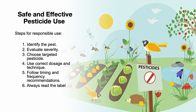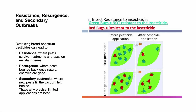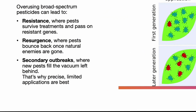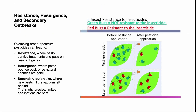For any pesticide use, you must identify the pest correctly, evaluate how serious the issue is, choose a product that targets the pest, apply the right dose at the right time using the correct technique, and always follow the label and legal requirements. The label is the law. Risks of misusing pesticides include harm to non-target organisms, resistance development, secondary pest outbreaks, and even legal consequences. Overusing broad-spectrum pesticides can lead to resistance — where pests survive treatments and pass on resistant genes — resurgence, where pests bounce back once natural enemies are gone, and secondary outbreaks where new pests fill the vacuum left behind. That's why precise, limited applications are best.